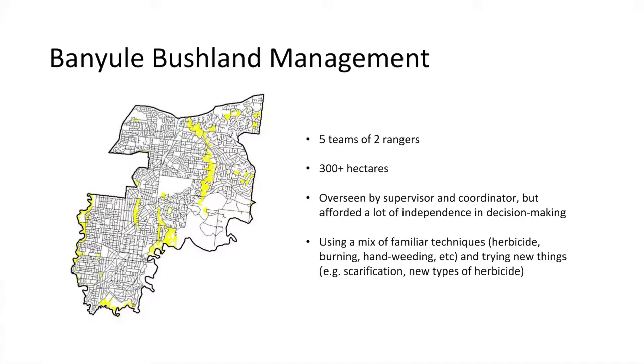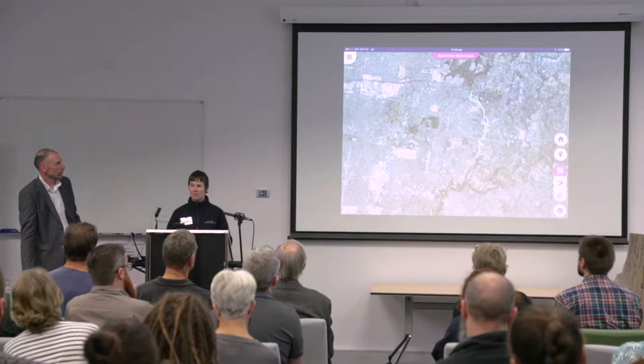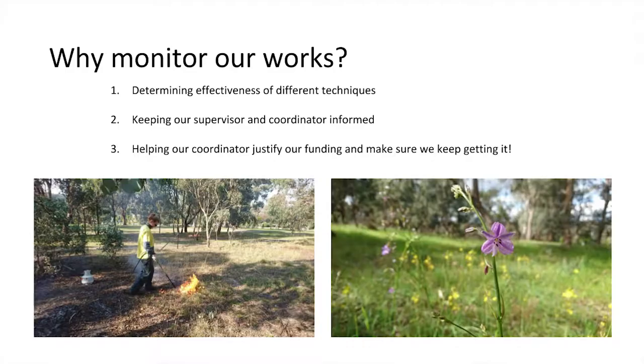To give you a bit of background: the manual bush crew consists of five teams with two rangers in each team, and between us we manage a bit over 300 hectares of bushland reserves. Each team has specific sites they manage. We receive guidance from management plans and our supervisor and coordinator, but we're also accorded a lot of independence to make our own decisions in the field based on what we're observing.